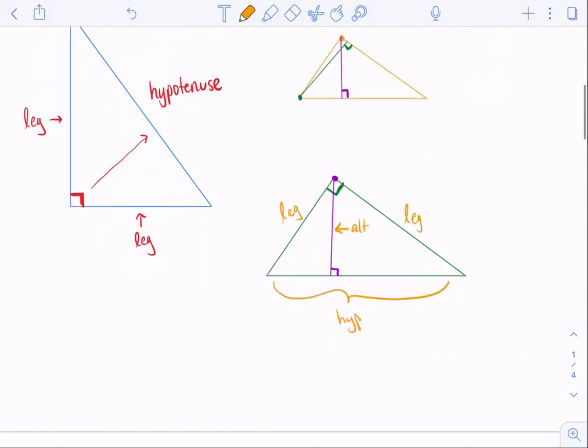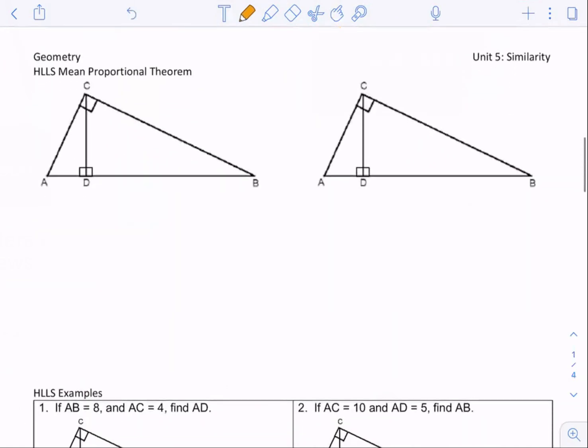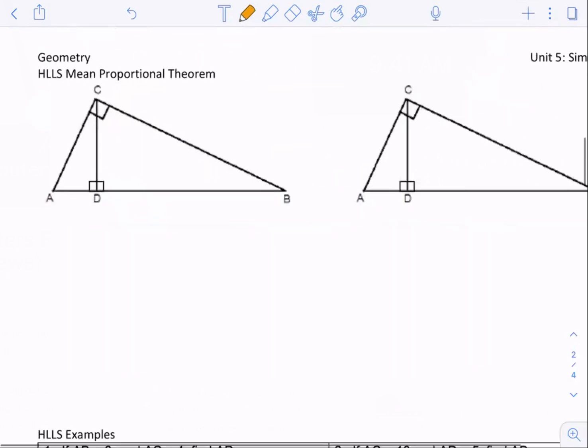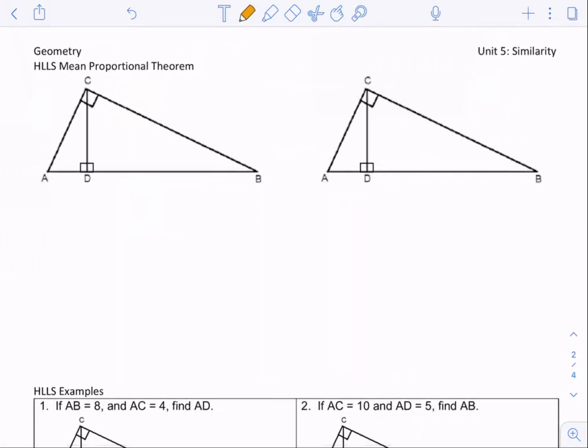If you understand that much this topic will be a breeze. So let's take a look at the first type of proportion that you would see. So I'm going to talk about Hills. Now the reason why we call it Hills is that represents this proportion: hypotenuse over leg equals leg over segment. Now you're going to say we talked about all those words except segment, which is okay. I'm going to discuss that in just a second.